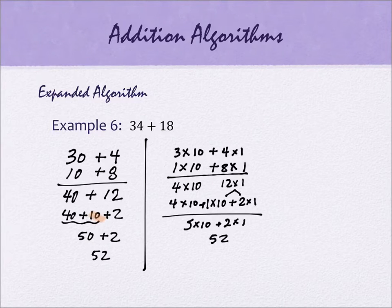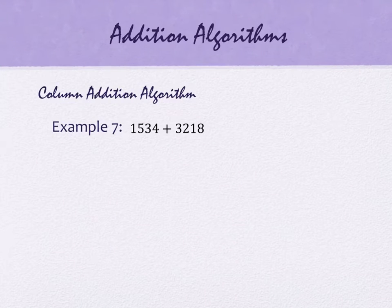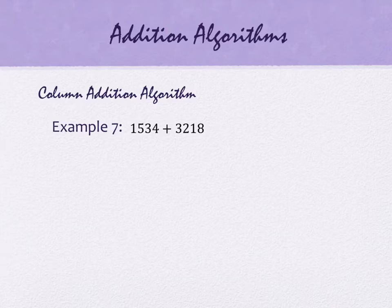You can also write the expanded algorithm using place value notation: 3 times 10 plus 4 times 1, and 1 times 10 plus 8 times 1, much like expanded form from section 1. You'd have 12 ones and 4 tens, then break the 12 ones into 1 ten and 2 ones, giving 5 tens and 2 ones for 52. It's a bit more writing without shedding much more light on the process.